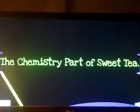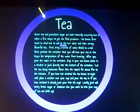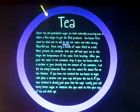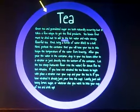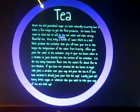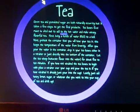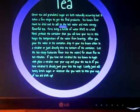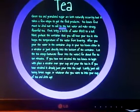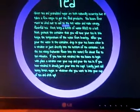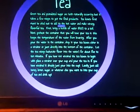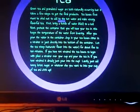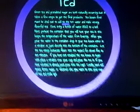Now let's talk about the chemistry part of sweet tea. Green tea and granulated sugar are both naturally occurring, but it takes a few steps to get to the final products. Tea leaves first must be dried out to add to the hot water to make strong, flavorful tea. First, bring a kettle of water, H2O, to a boil. Next, preheat the container that you will have your tea in — this keeps the temperature of the water from lowering. After you pour the water in the container, drop your tea leaves either in a strainer or just directly into the bottom of the container. Let the tea steep — saturate flavor into water — for about 5-10 minutes. If you have not strained the tea leaves to begin with, place a strainer over your cup and pour the tea in. If you have strained it already, just pour into the cup. Lastly, just add honey, lemon, sugar, or whatever else you want to put into your cup of tea and drink up.